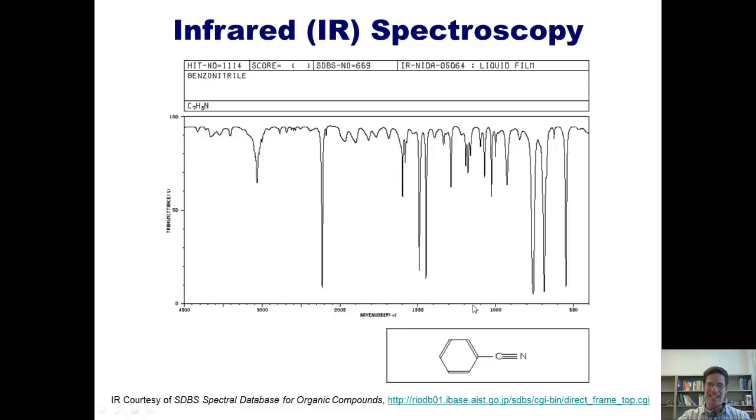Last functional group I want to show you is a nitrile. This compound is benzonitrile, C-triple-N bond. Where does that show up? It shows up right here at 2200. This, incidentally, is one of the few things that shows up between 3000 and 1700 in the IR spectrum. Right there, about 2200, give or take a little bit on either side.